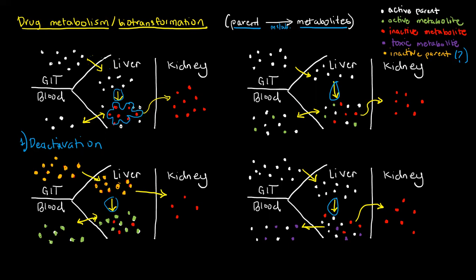Since the inactive metabolites are no longer doing any beneficial effect, off to the kidney they go — though it could actually go to different sites. It cannot just be urine; it could be sweat, saliva, or other secretions. In fact, it could go to the GI tract and exit our body through feces — biliary excretion is what we call it.